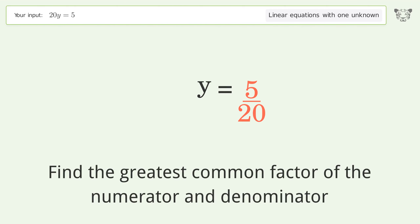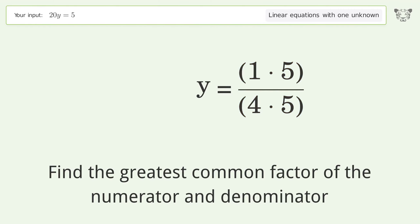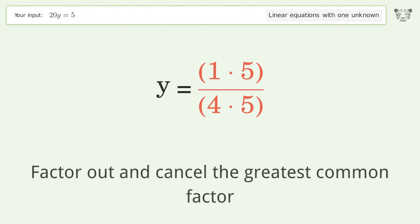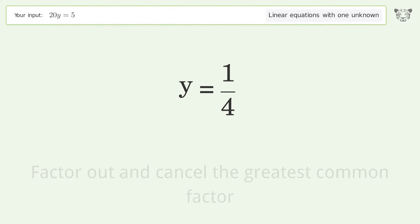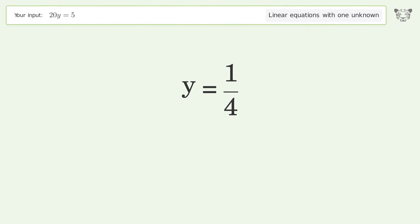Find the greatest common factor of the numerator and denominator, then factor out and cancel the greatest common factor. The final result is y equals one over four.